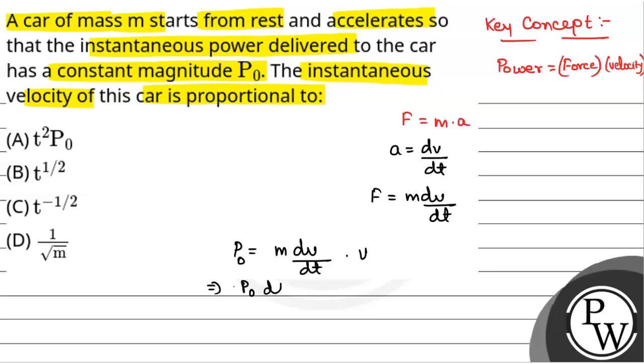P0 is equal to M into dV by dt into V. We will have P0 dt by M that is equal to VdV. Integrating both the sides,